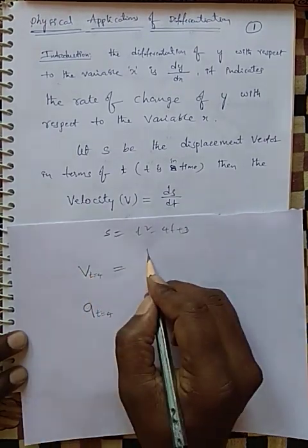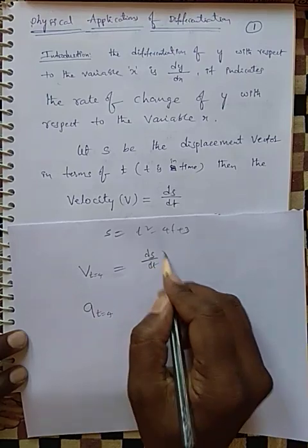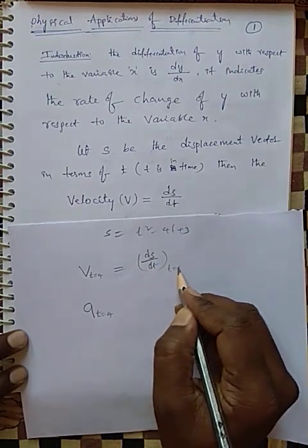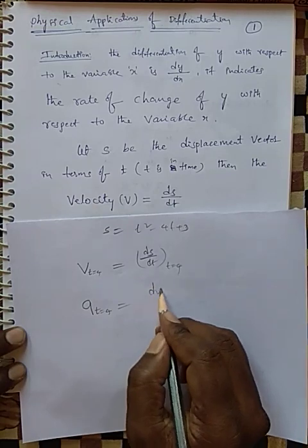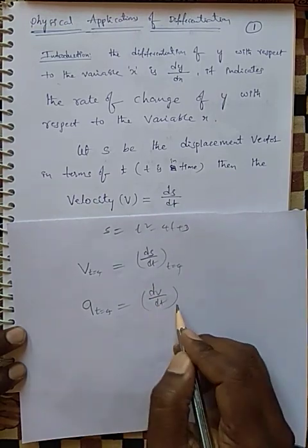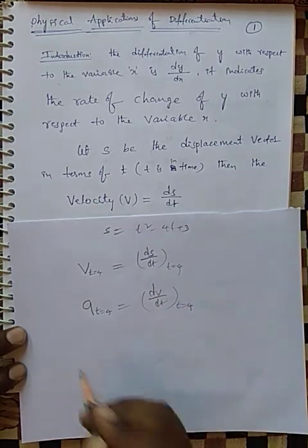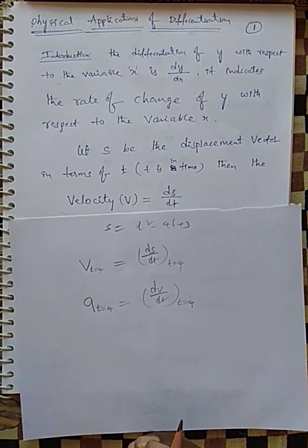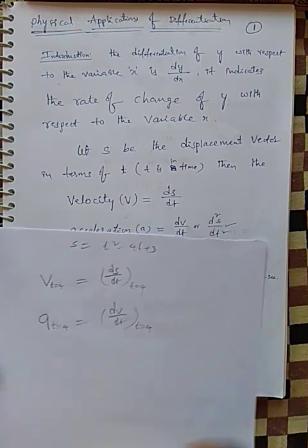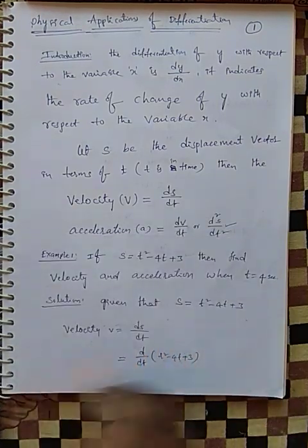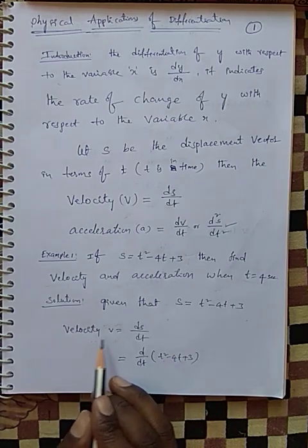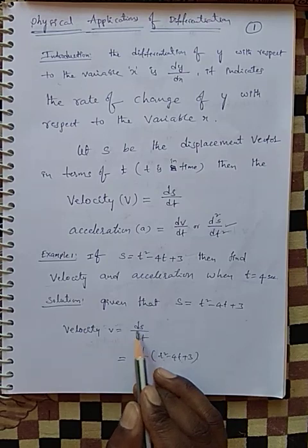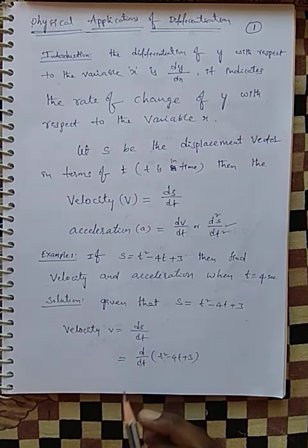The formula for velocity is V = ds/dt at t = 4. The formula for acceleration is a = dv/dt at t = 4. So let us find these two — first velocity and acceleration, then evaluate them at t = 4.